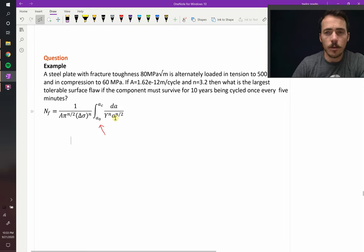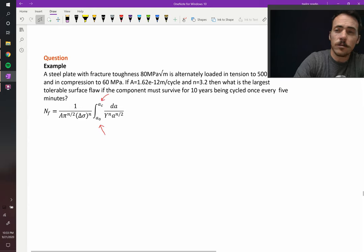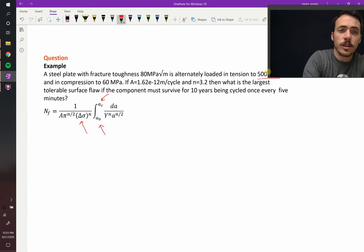So A we don't need, that's going to be in the integral, but we do need to know what our final critical surface flaw is. Y we're going to assume is 1.12. Delta sigma we need to know, but we're told that it cycles between 500 in tension and 60 in compression.